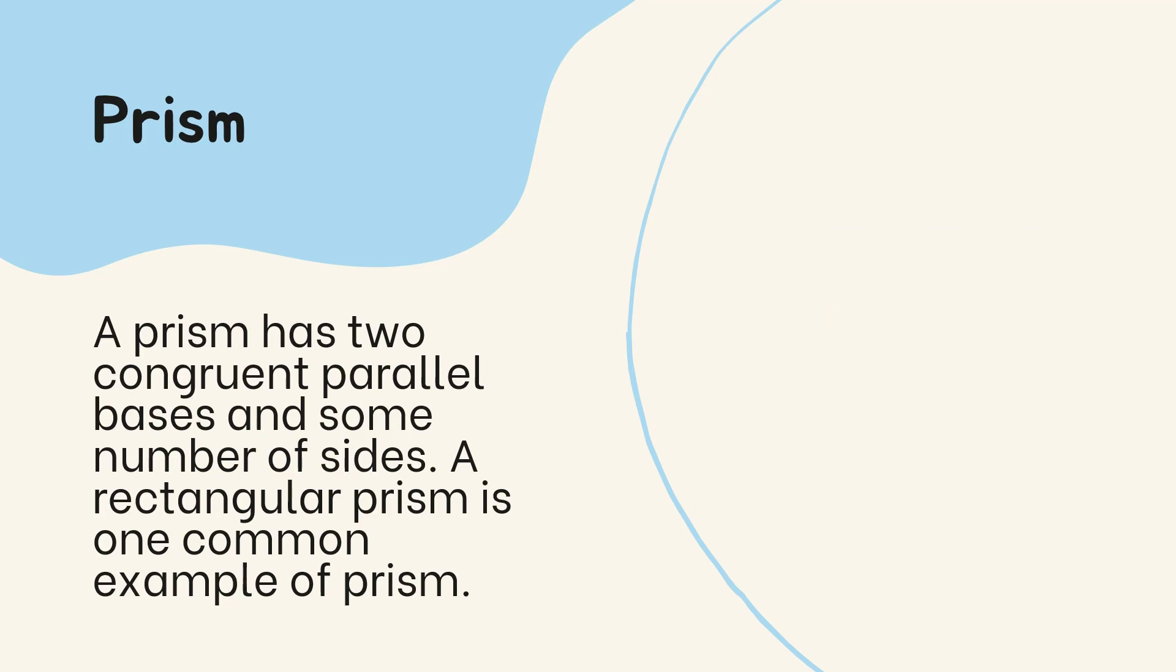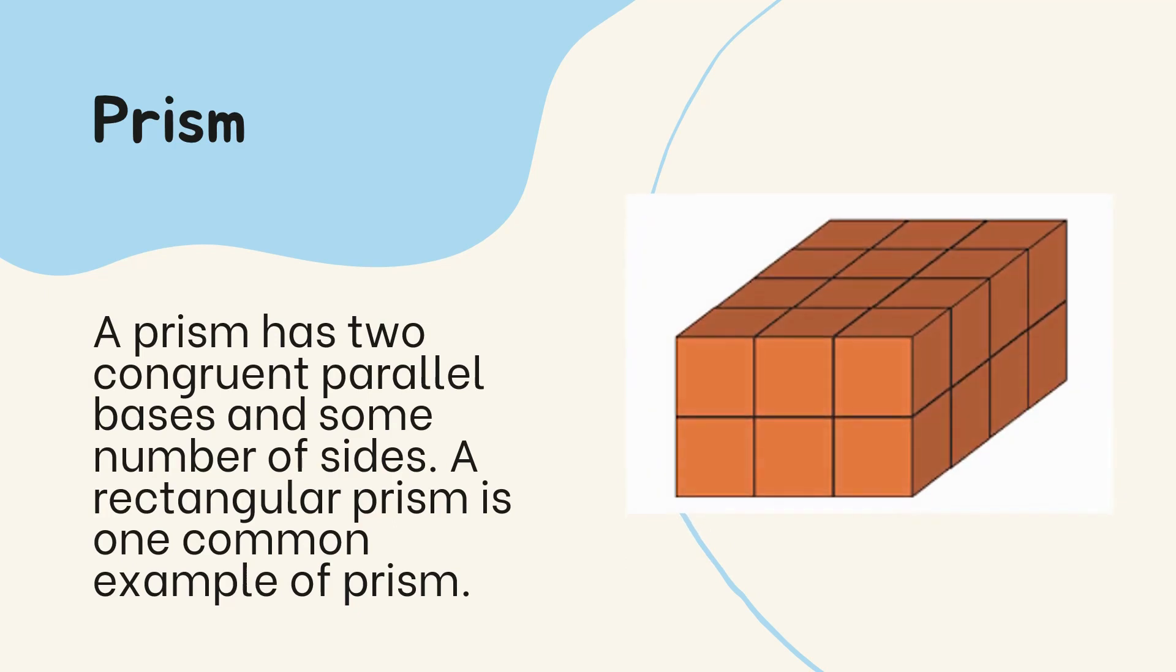Now we have here a three-dimensional figure of rectangular prism that shows the cubic units that you can see in this figure. We have here the height, so we have 2, and here we have 3, and then for the last one we have 4. So we have 2 times 3 times 4, so we have 24 cubic units.